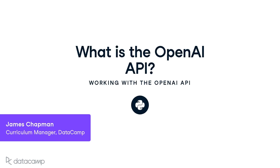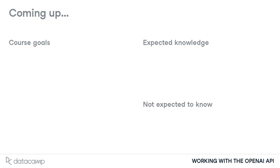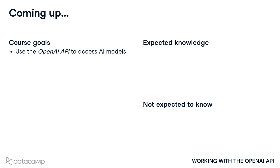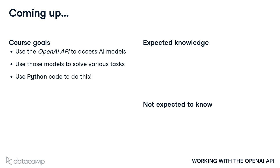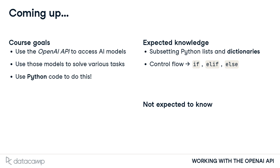I'm James and I'll be your host as we explore the artificial intelligence functionality available via the OpenAI API. In this course you'll learn how to use the AI models available through the OpenAI API to solve a wide range of real-world tasks. We'll be using Python code throughout the course, and expect familiarity with subsetting lists and dictionaries, control flow and looping. However, no experience with AI or machine learning is required.